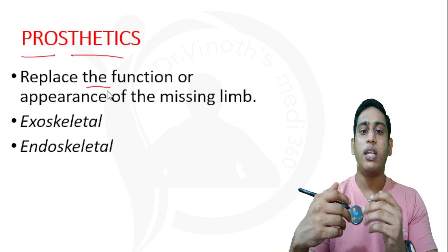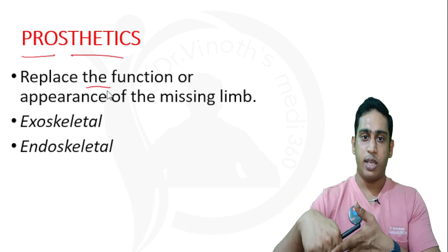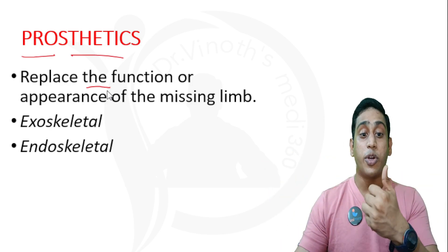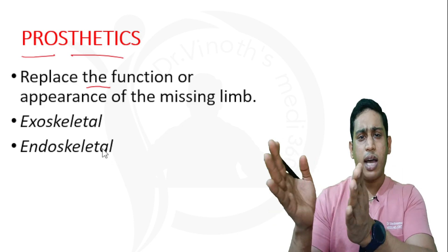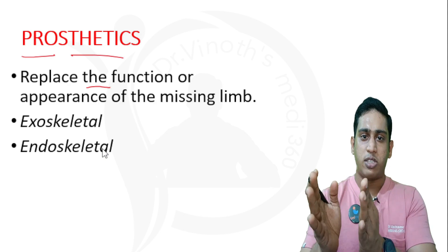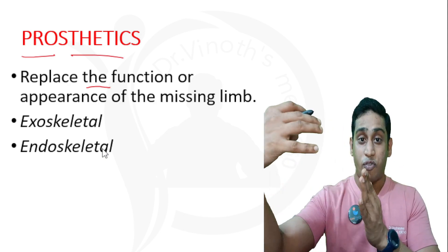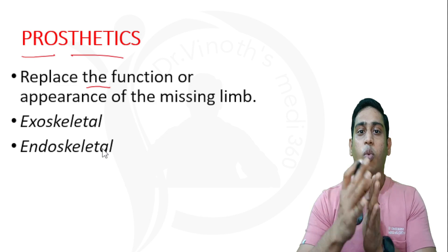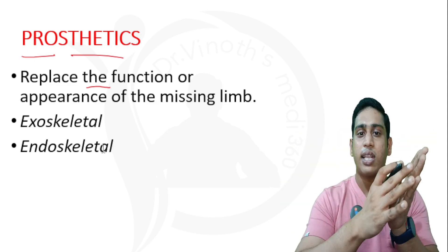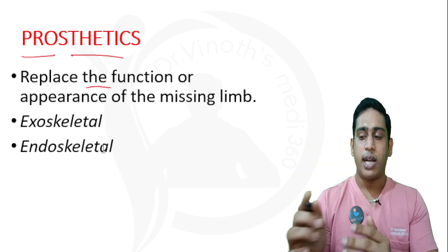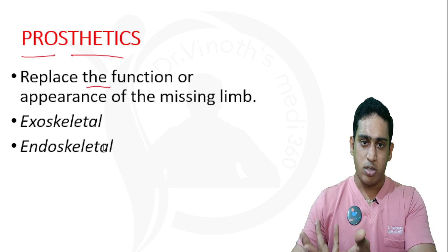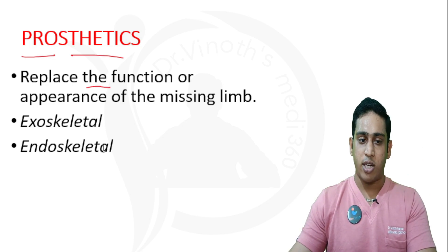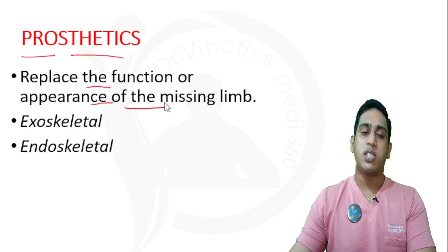In prosthesis, we want a mobile joint just to replace the limb — either we are going to replace the function or the appearance of the limb. For example, after an amputation, even if the patient does not want function, but wants a limb that looks like the actual limb, we can give a static prosthesis without any movement at the knee joint. So, either we are replacing the function or the appearance of the missing limb.